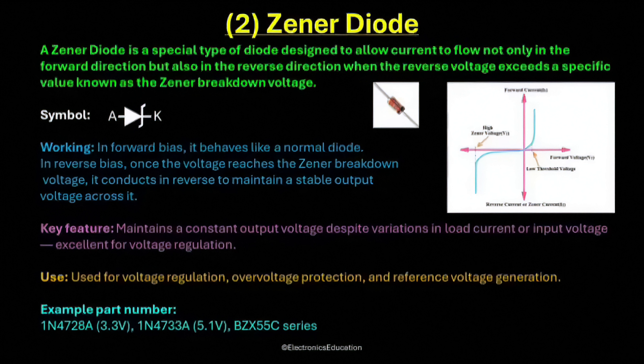In forward bias, it behaves just like a normal diode. It allows current to flow from the anode to the cathode when the applied voltage is greater than the forward threshold, which is usually around 0.7 volts for a silicon diode. In reverse bias, however, the behavior is very different. When the voltage applied in the reverse direction is below a certain value, the diode does not conduct, just like a normal diode.